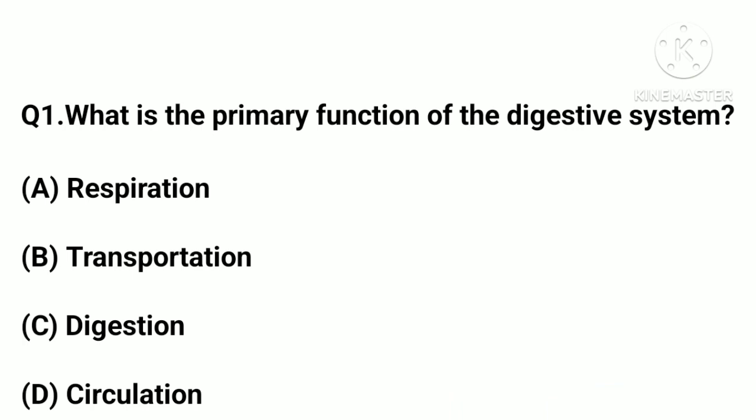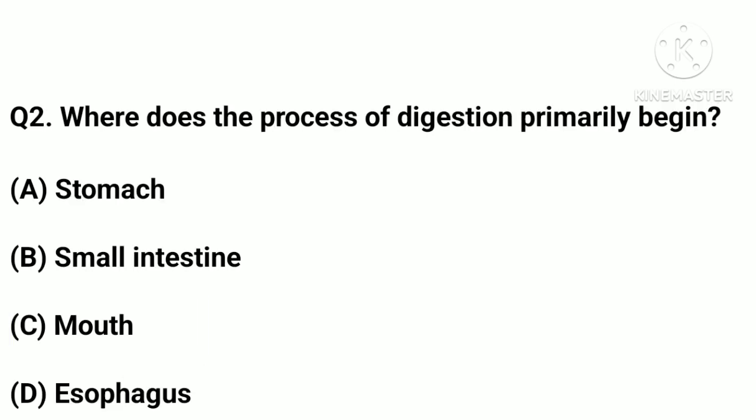Question number one: What is the primary function of the digestive system? Option a: respiration. Option b: transportation. Option c: digestion. Option d: circulation. Correct answer: option c, digestion.